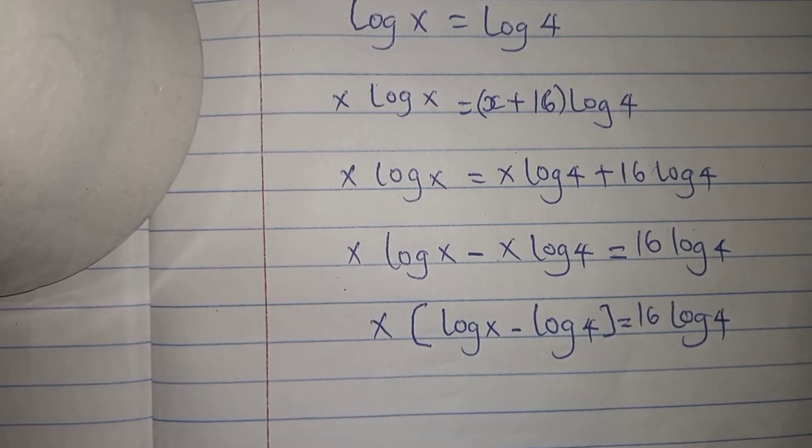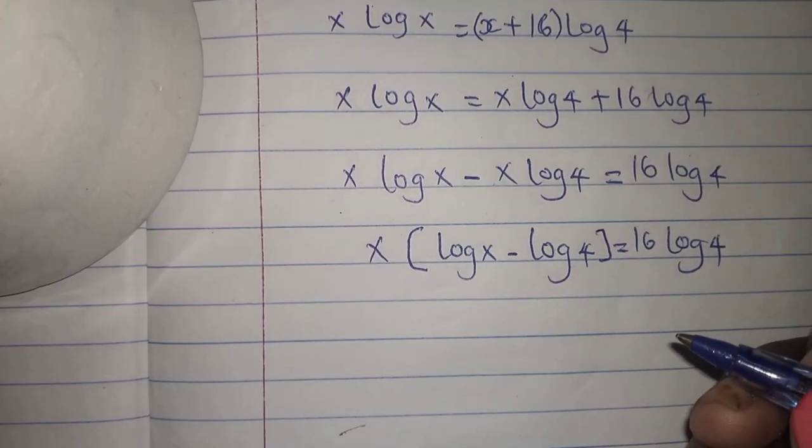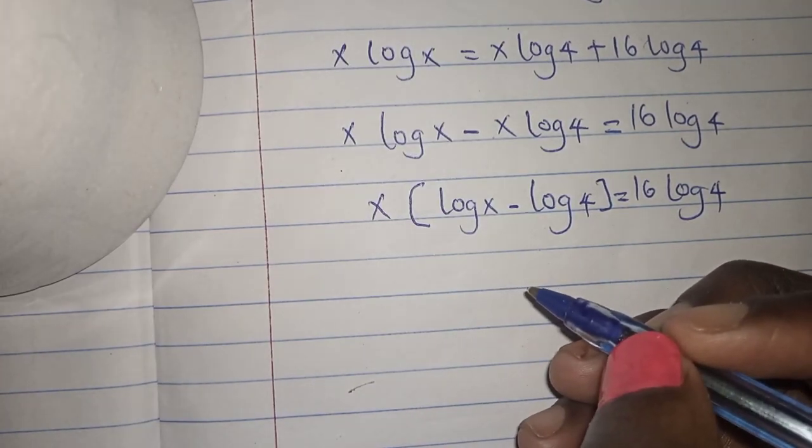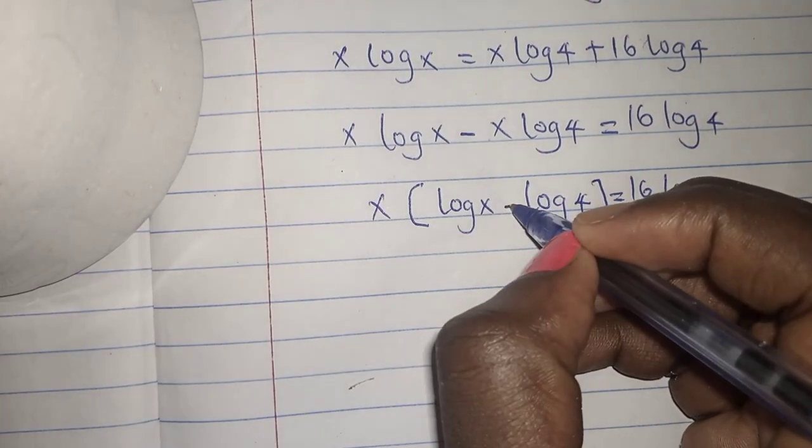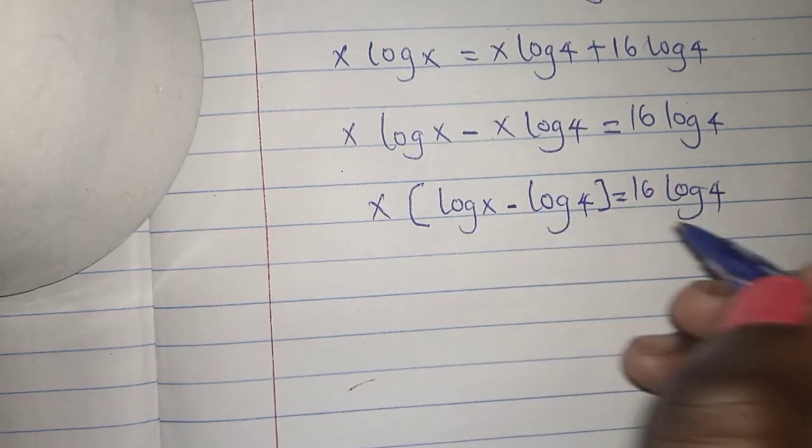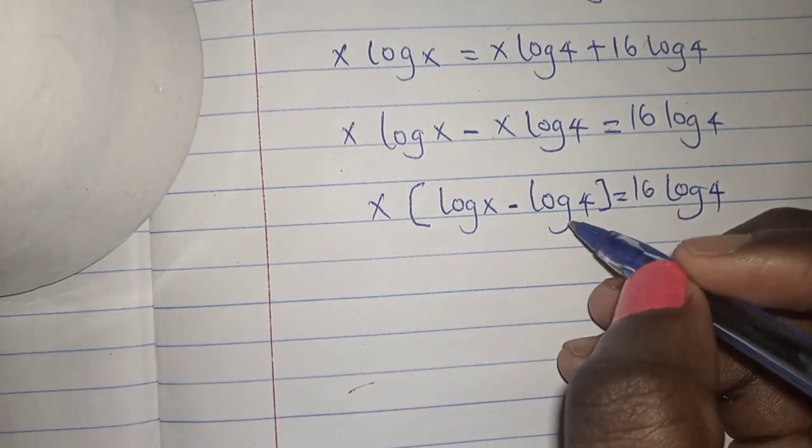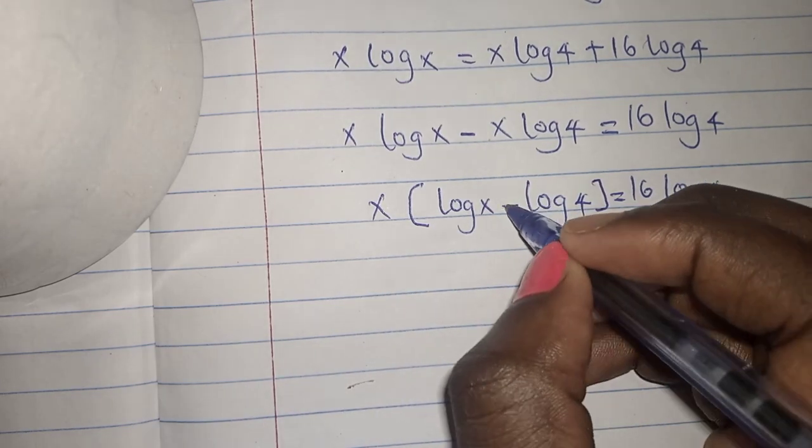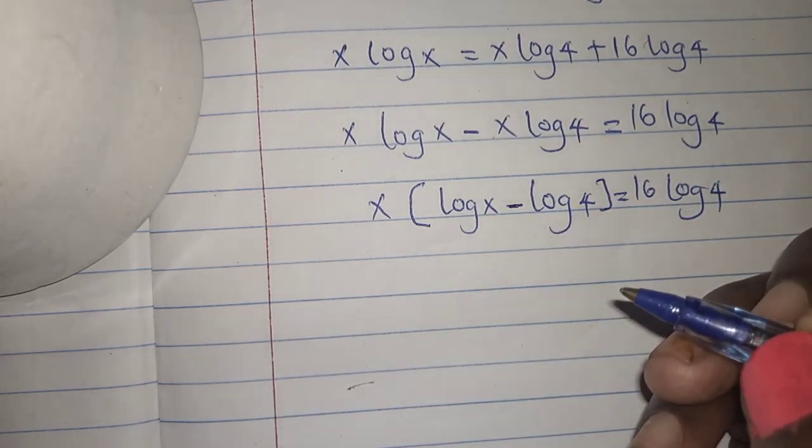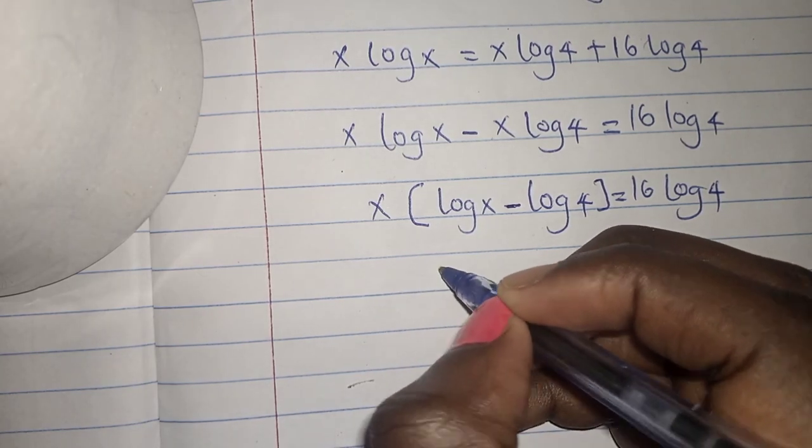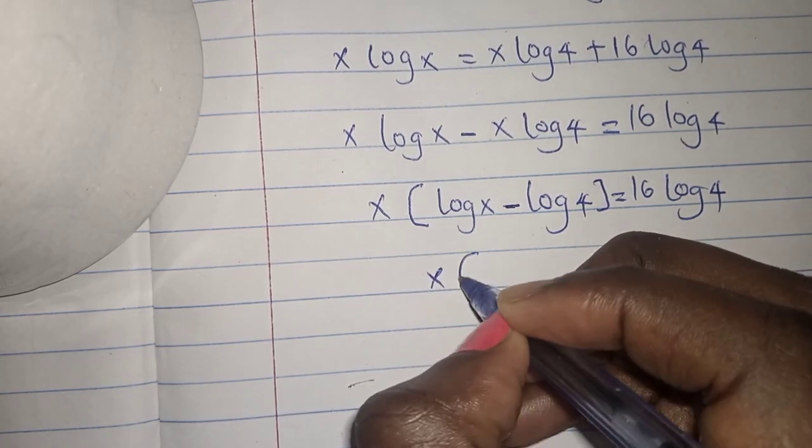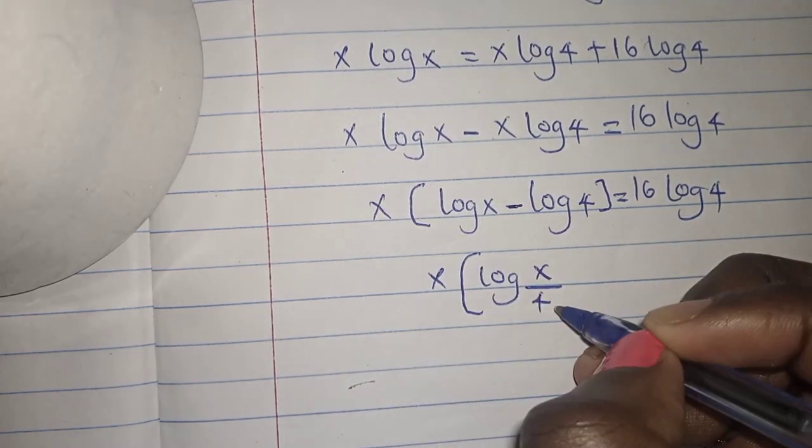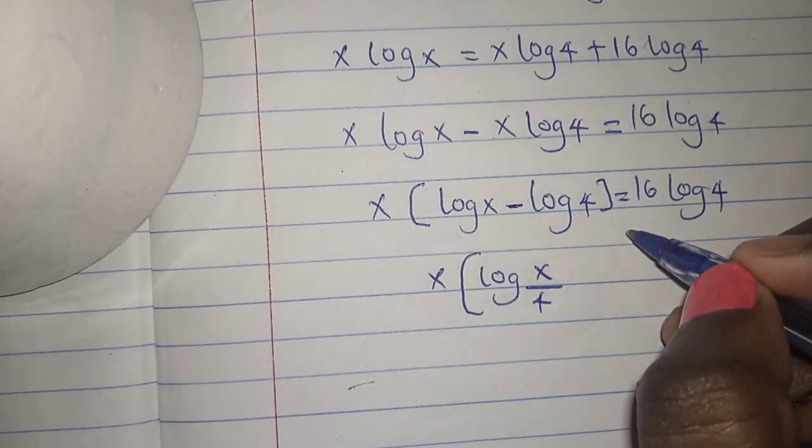So my next step over here, I'm going to write, remember the other laws of logarithm. When we have subtraction, you can divide the logs. When the logs have the same basis or when the logs are the same and we have a subtraction sign, you can divide the log. So that's the next step. I'll write x into log x divided by 4. So this is just the same as this one.